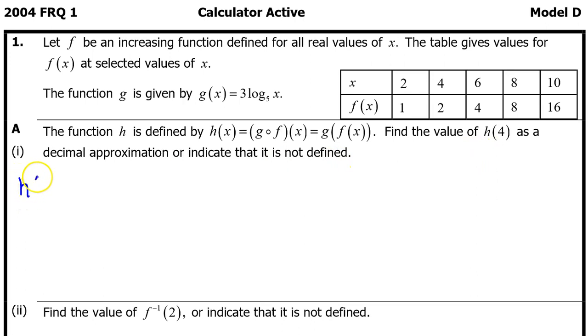h at 4 means plugging in 4 for x right here. So h at 4 will equal g at f at 4. Working from the inside out, we see that f at 4 is 2. So let's substitute 2 for f at 4. We now have g at 2.